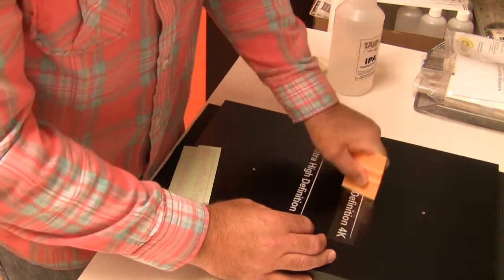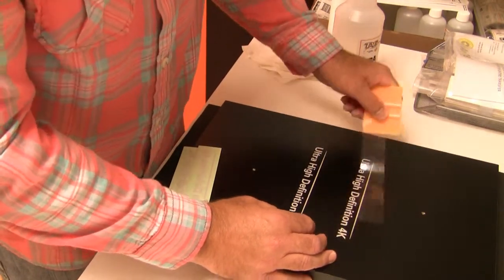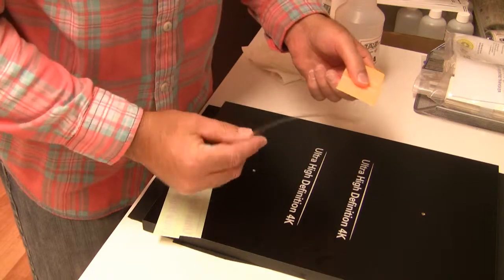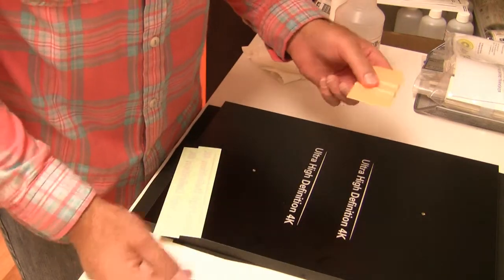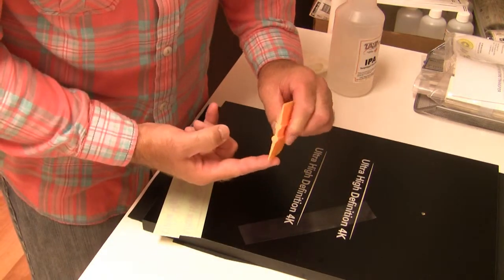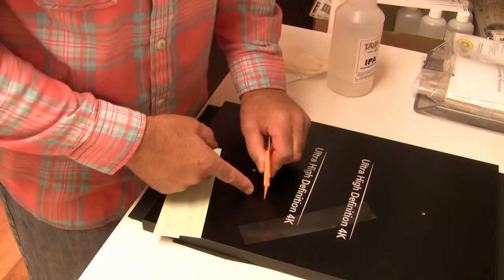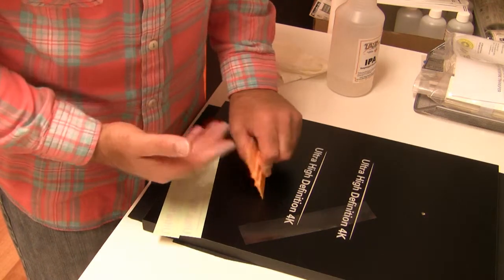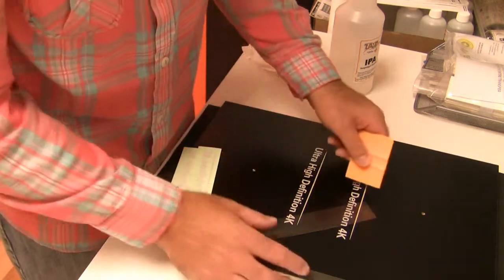The objective is to get it to snap and release from the clear carrier. The technique to use is to hold that squeegee either at a 90 degree angle to the surface or between 70 and 90 degree angle to the surface.